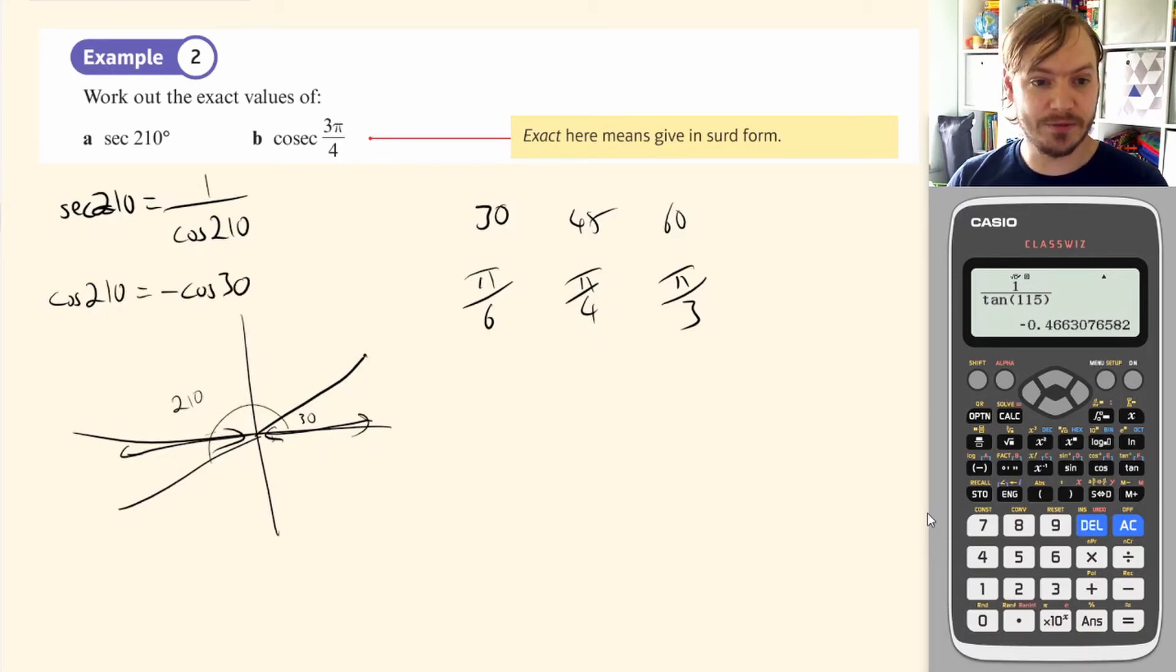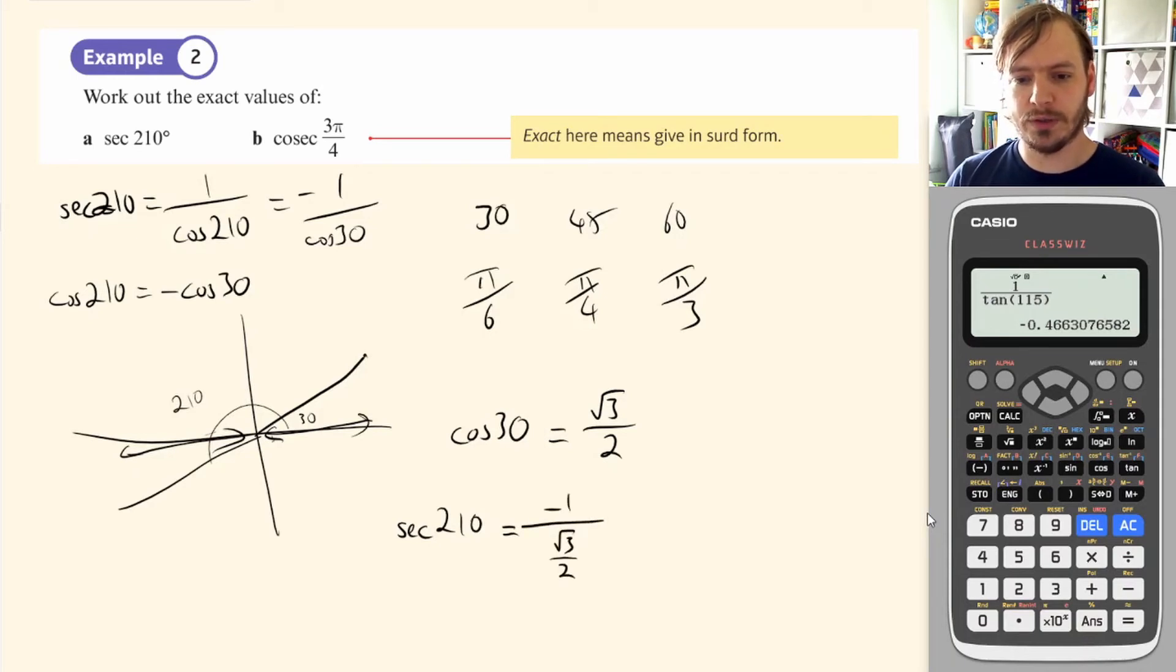So that means sec of 210 is the same as the negative of 1 over cos of 30. So this is negative 1 over cos of 30. And then we just need to remind ourselves what cos of 30 is. So cos of 30 is, hopefully you recall, root 3 over 2. So sec of 210 must be negative 1 over root 3 over 2. So this is the negative reciprocal of this. So this is negative 2 over root 3.